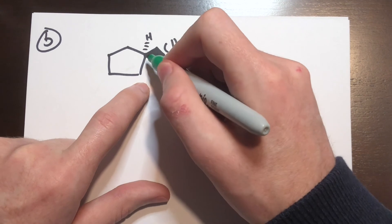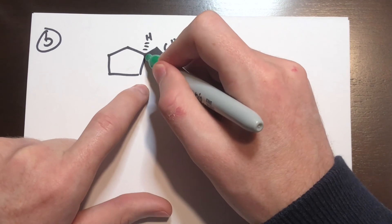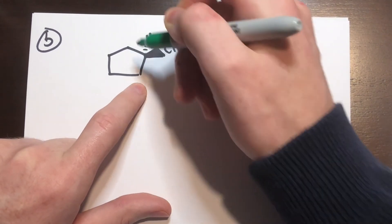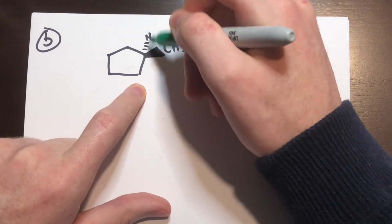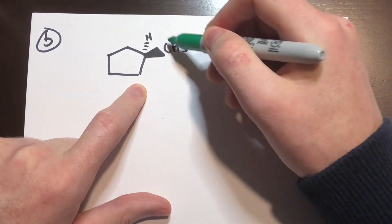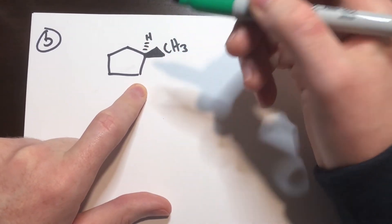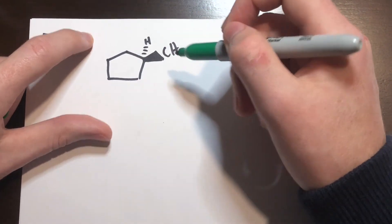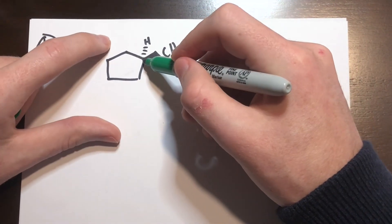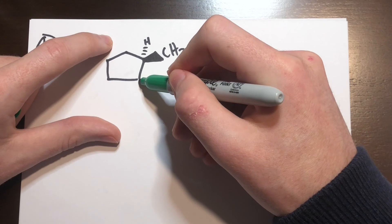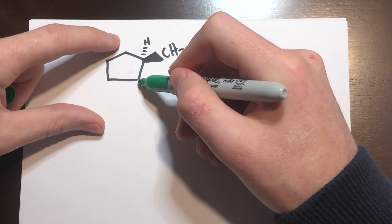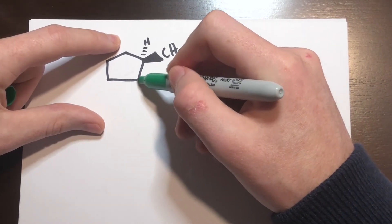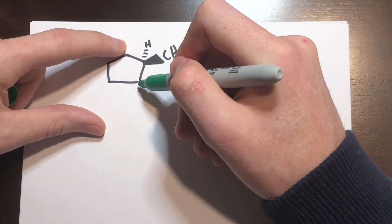So we look at this position — we have a carbon that's bound to a carbon, a carbon, a CH3, and a hydrogen. Right away, we know the hydrogen and the CH3 groups are different. And now we have to compare the rest of this to see if it's the same.